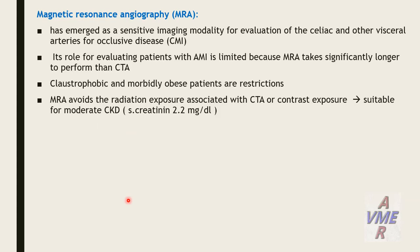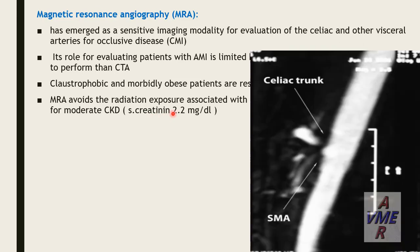MR angiography has emerged as a sensitive imaging modality for evaluation of the celiac and other visceral arteries for occlusive disease and chronic mesenteric ischemia. Its role in acute mesenteric ischemia is limited because MR angiography takes significantly longer than CT angiography. Limitations include claustrophobia and morbidly obese patients. MR angiography avoids radiation and contrast exposure associated with CT angiography, making it suitable for moderate chronic kidney disease with creatinine up to 2.2 mg/dL. This MR angiography picture shows tight stenosis of the celiac trunk and occlusion of the superior mesenteric artery.